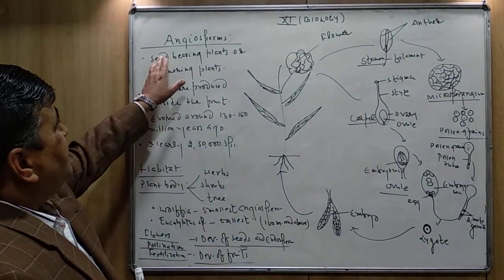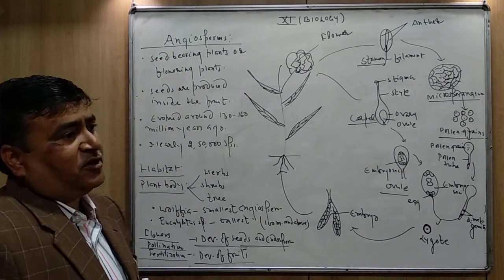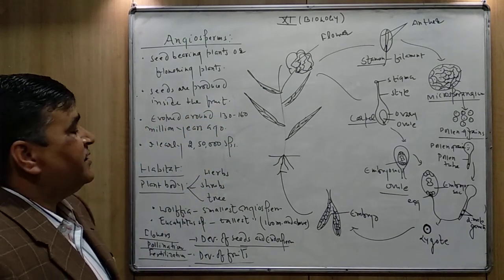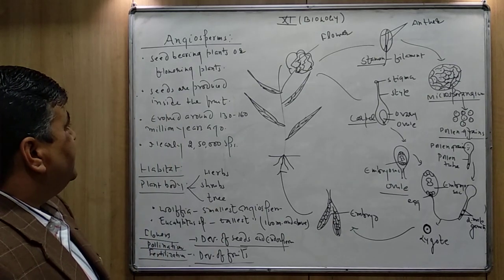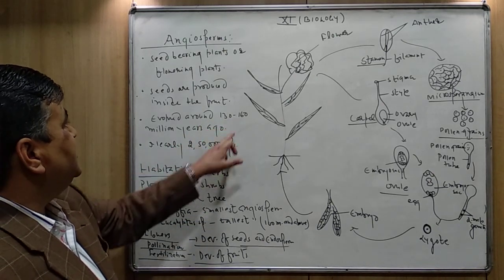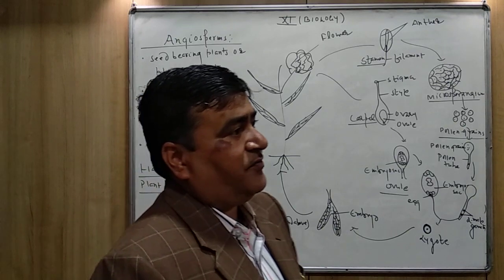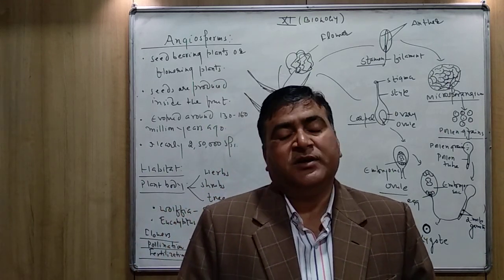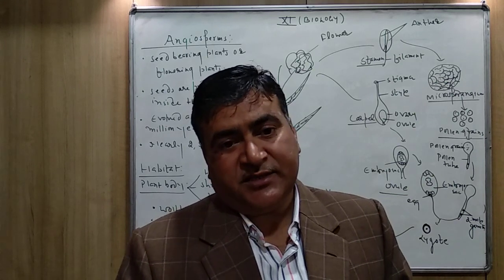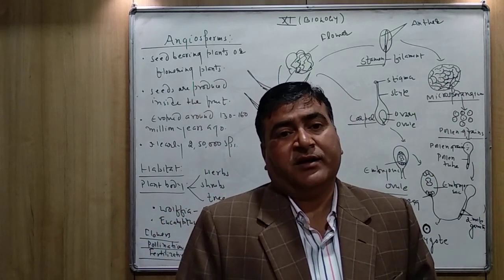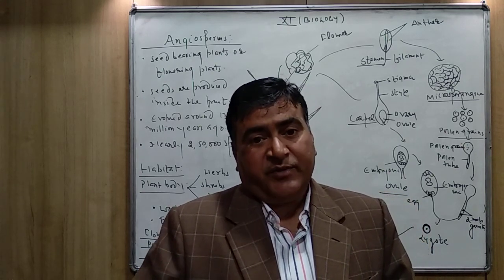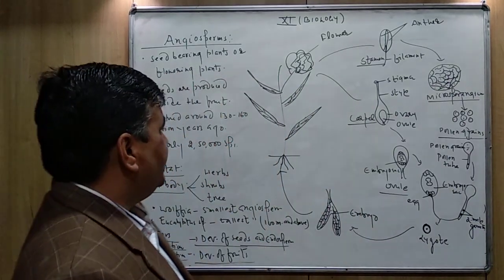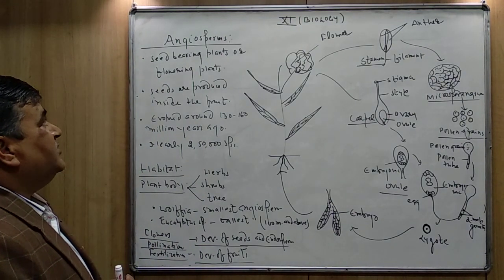So angiospermic plants are seed-bearing plants, also known as flowering plants, and seeds are present inside the fruits. Angiospermic plants evolved around 130 to 160 million years ago. They evolved after gymnosperms — first algae, then bryophytes, pteridophytes, gymnosperms, and then angiosperms. So angiosperms are the modern plants of the present era, and they are the dominating plants, with nearly 250,000 species found.